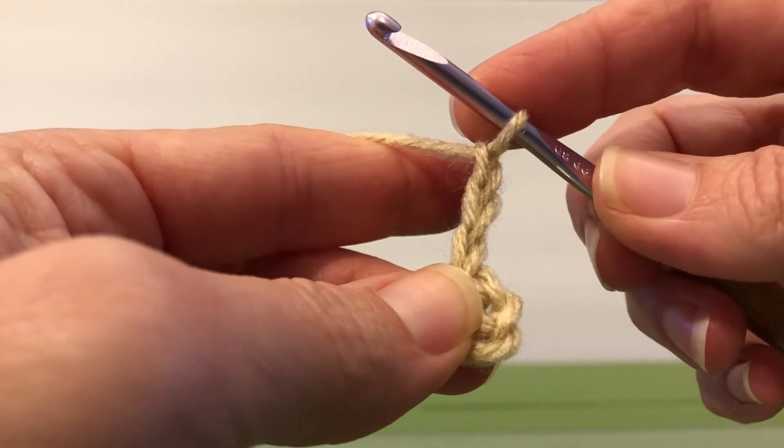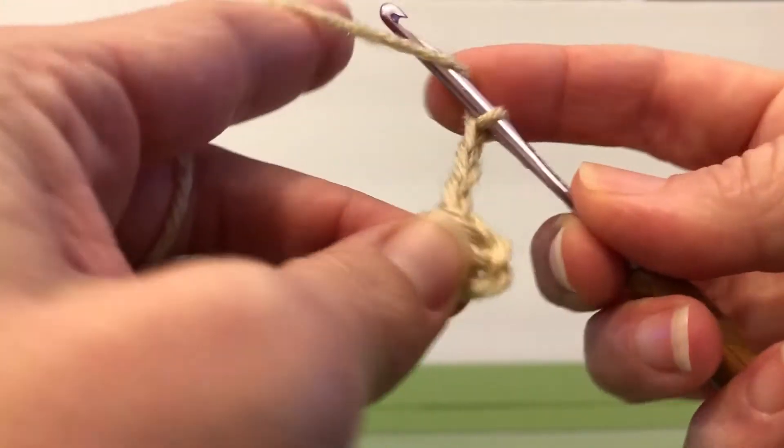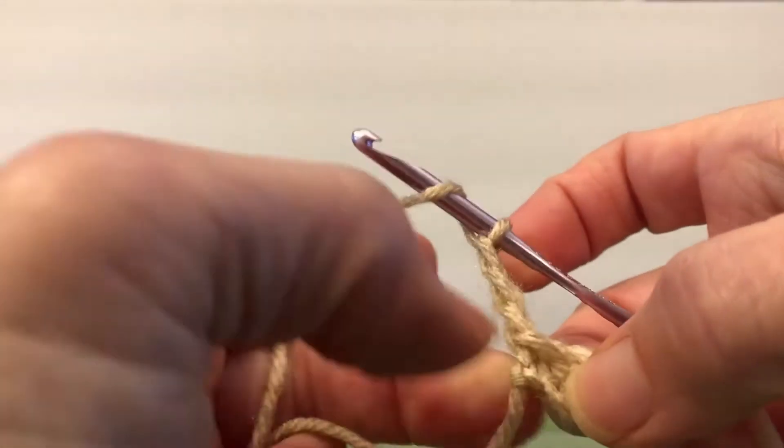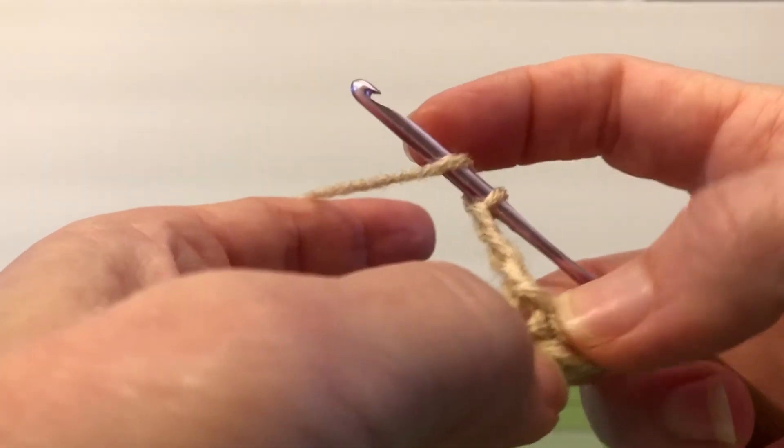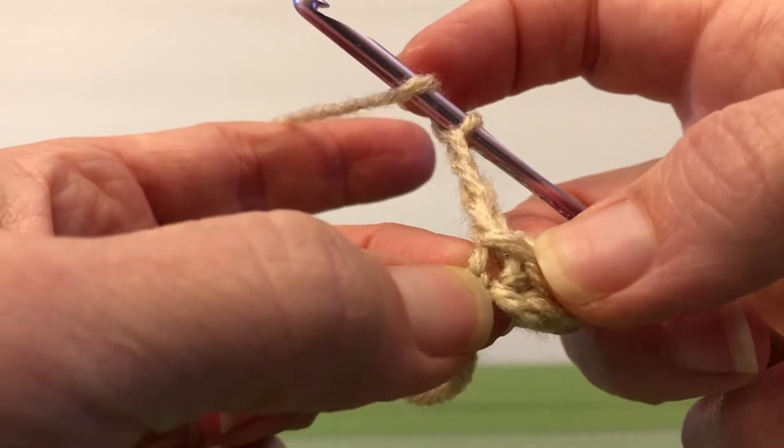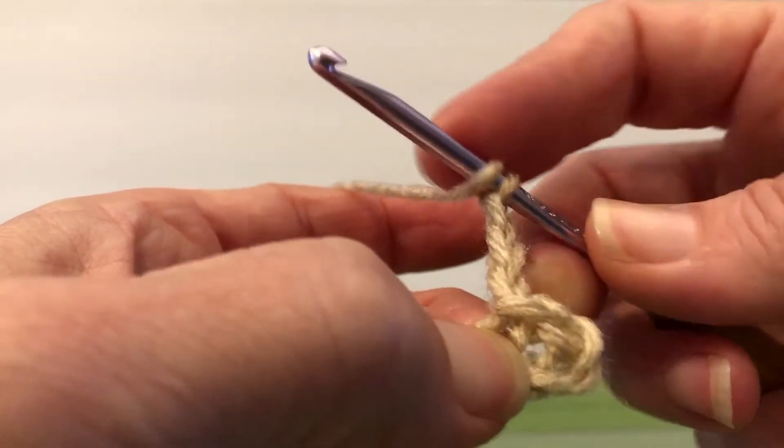And now we're going to do two double crochets into the center ring of our work. So we're going to yarn over, and now you want to make sure you can find the center of your work here. It looks like it's right there. It's not. That was where we joined it. It's over here.